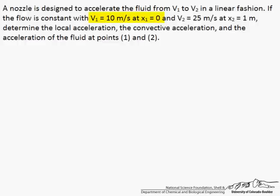We have v1 equaling 10 meters per second at x equals 0, and v2 equaling 25 meters per second at x equals 1 meter. The fact that the velocity changes from point 1 to point 2 tells us there must be some kind of acceleration.